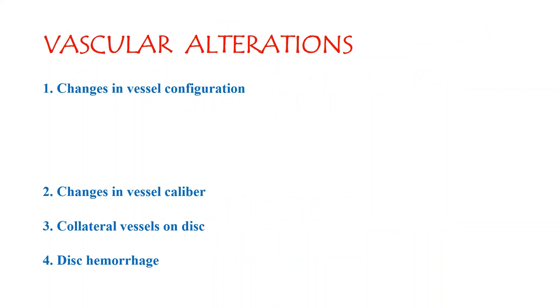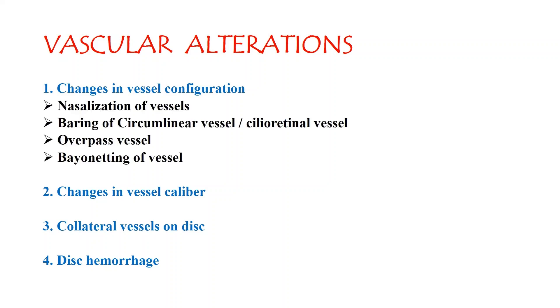Several characteristic vascular changes can be observed in glaucomatous eyes, including changes in vessel configuration and caliber, collateral vessel on disc, and disc hemorrhage.